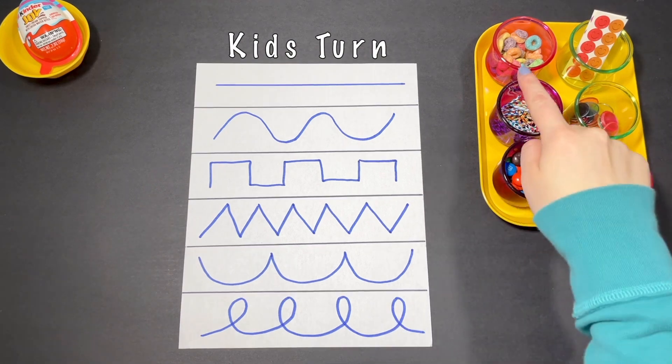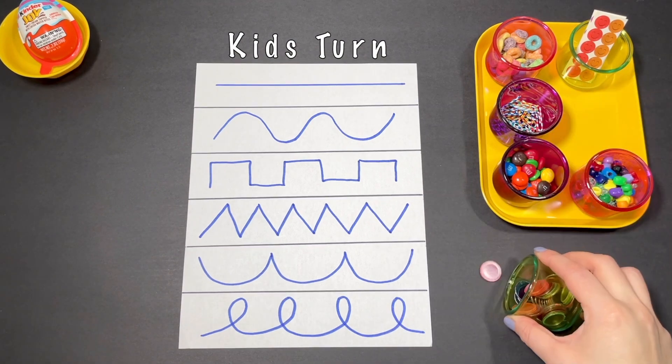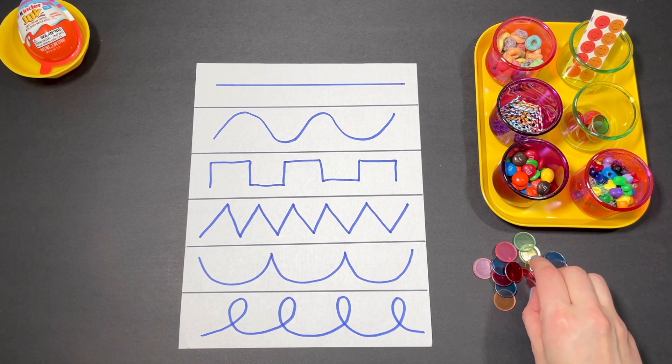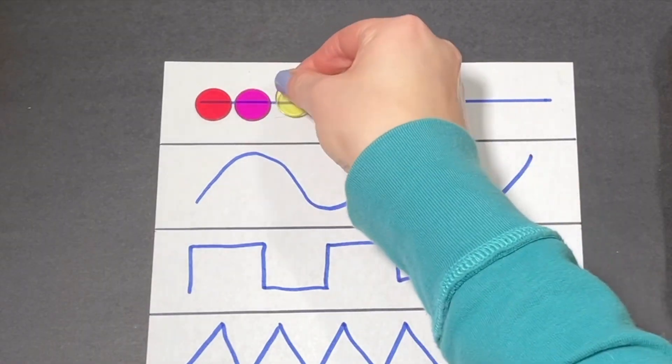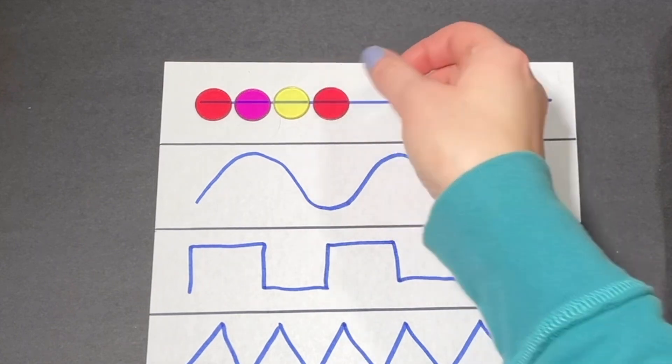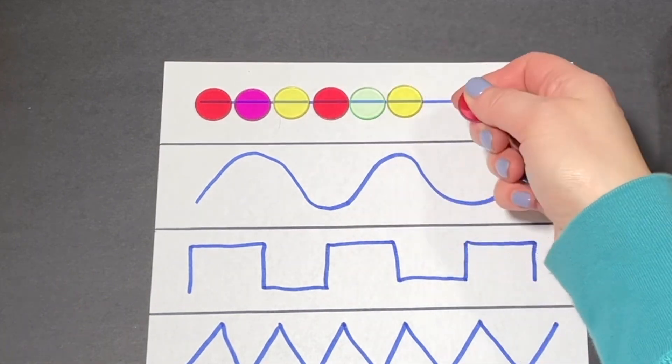Let's do a straight line first. Kids can pick up one item at a time and place it on the line. If you want more challenge, put more than one item in your hand like I do and use your fingers to put it on the line.